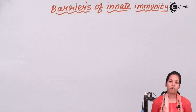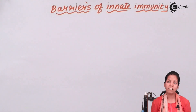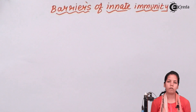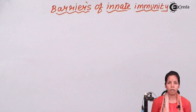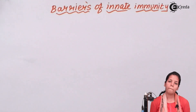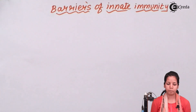Phagocytic barriers are cells of your body, or immune cells, that actually consume other cells. These phagocytic cells could be WBCs, neutrophils, basophils, eosinophils, and all of them.